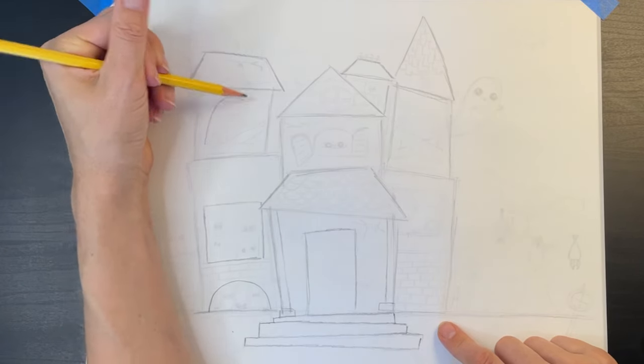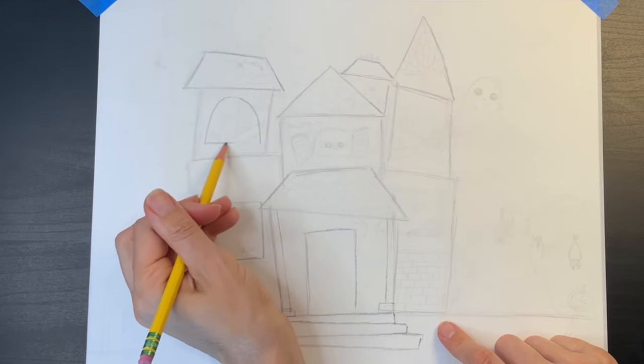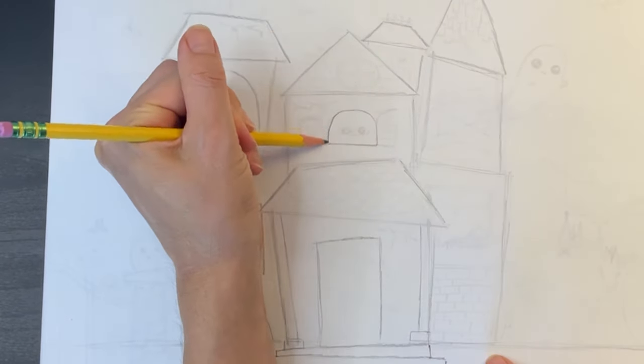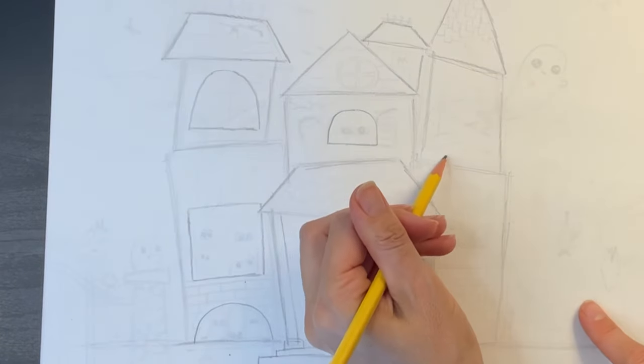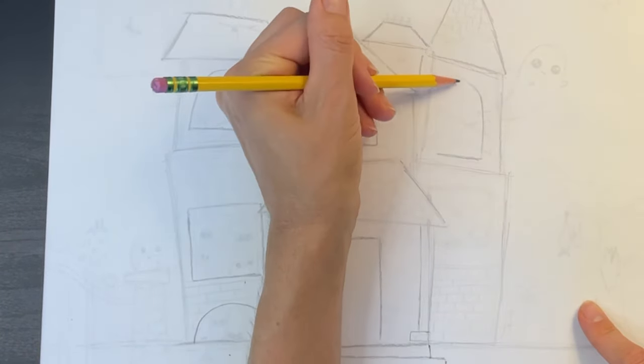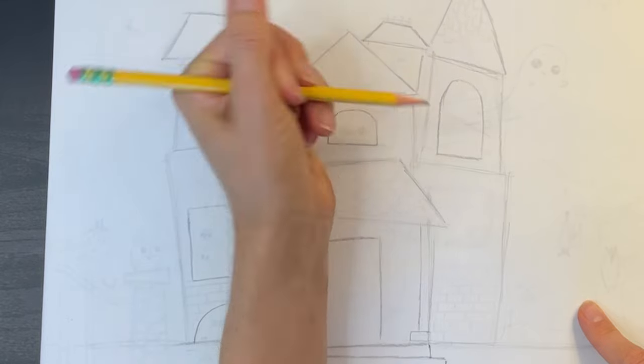I'm drawing a half oval shape for this upstairs window and another half oval shape for the window next to it. And then on the right one more window that's that same half oval shape just longer and more stretched out.